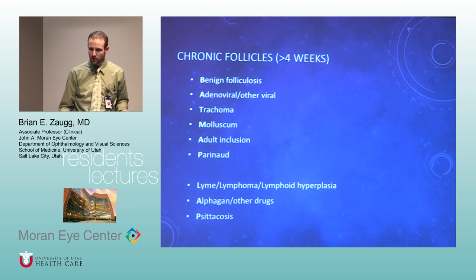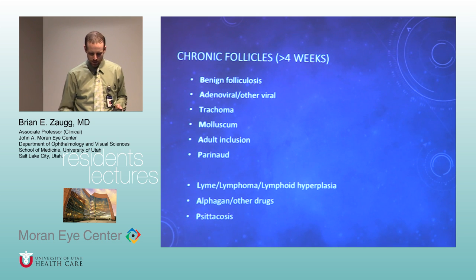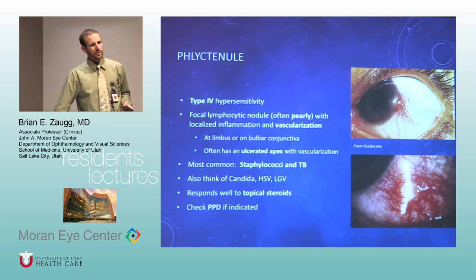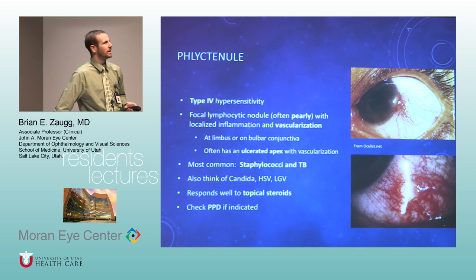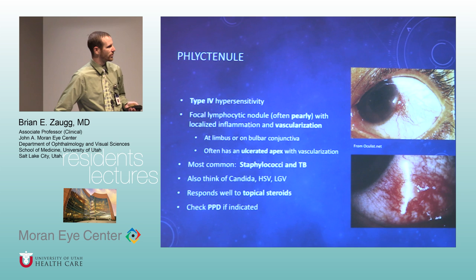For chronic follicular conjunctivitis, the main things they'll test you on are herpes and molluscum — make sure to look around the eyelid and lashes — and then chlamydia. Phlyctenules are migrating inflammatory nodules on the ocular surface. In our country they're usually staph-related, so I treat these with a combination antibiotic-steroid. If someone's been in a TB-endemic area, think about that and test them — PPD is what you're considering when you see a phlyctenule.